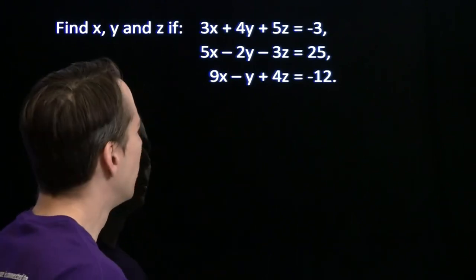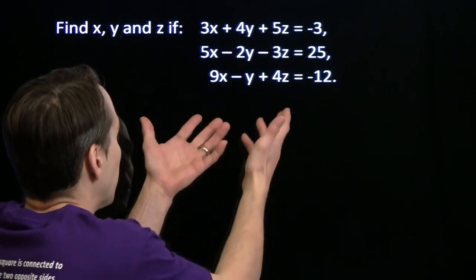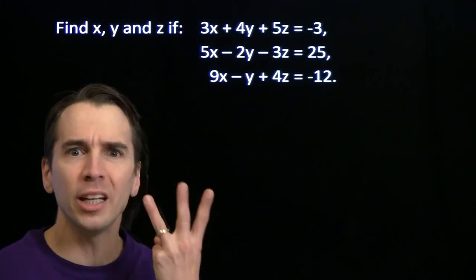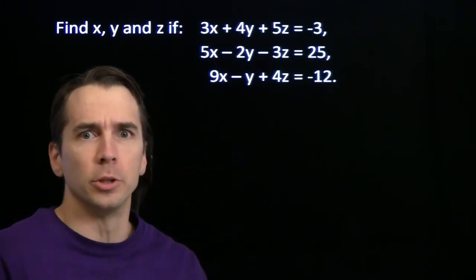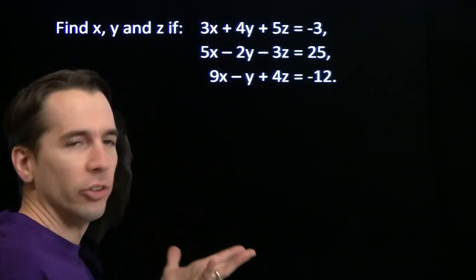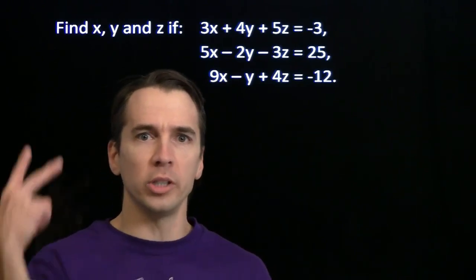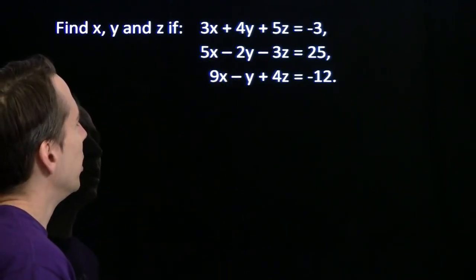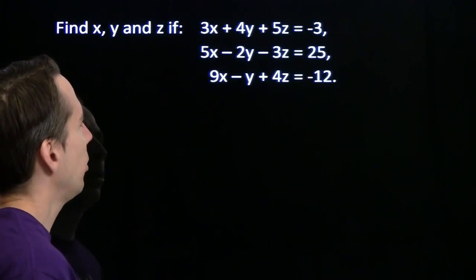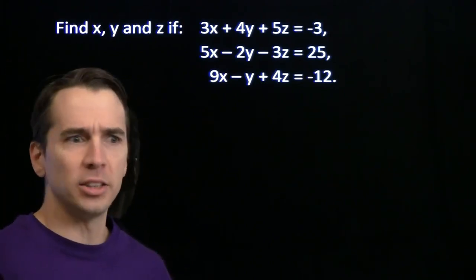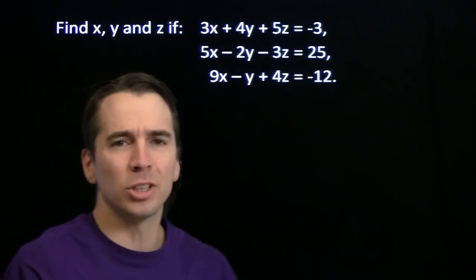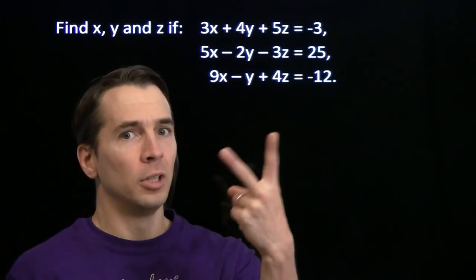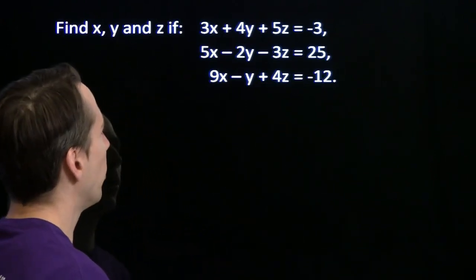What's this? These equations are linear, but there are three of them, and there are three variables. I know how to handle systems of equations when there are just two equations and two variables, but here we've got three. I don't have any special strategies for that, so I'm going to try the same thing I did with systems of two linear equations and see if that works.